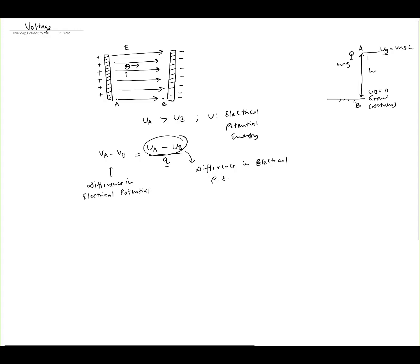A lot of times we talk about potential or voltage at a certain point. The difference in electrical potential is the same thing as the voltage difference. In circuits, we often talk about the voltage at a certain point, but in reality you cannot talk about voltage at a point without a reference. That reference would be the reference voltage at point B. We set a datum — called ground in electrical circuits — at zero voltage, and then we can safely talk about the voltage at other points.